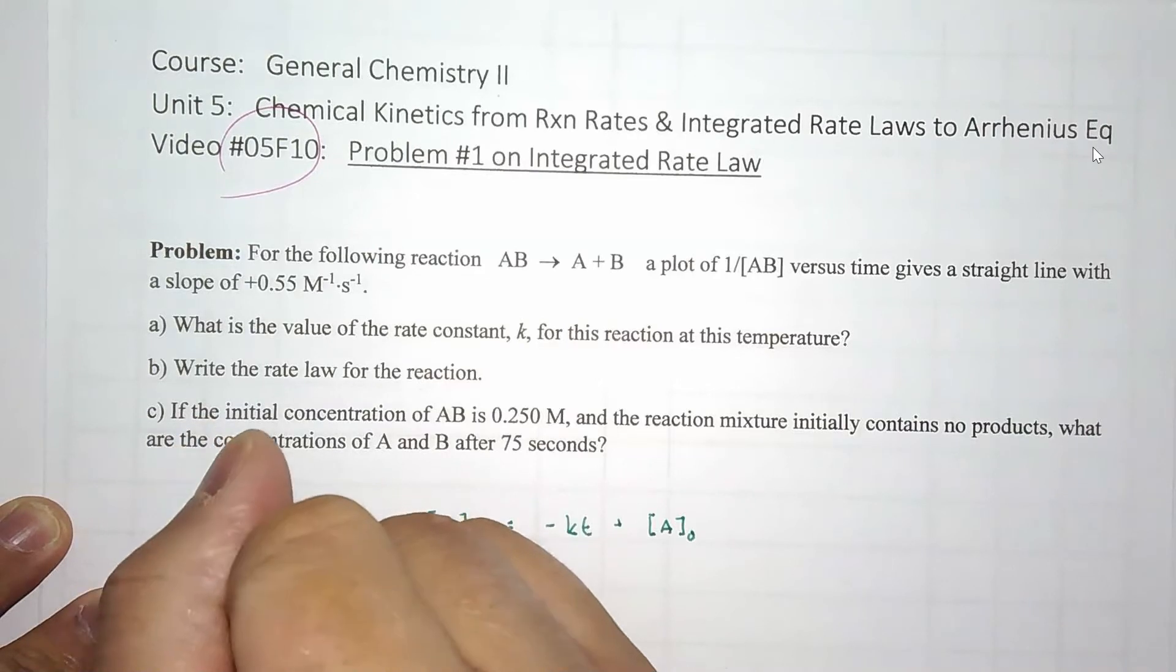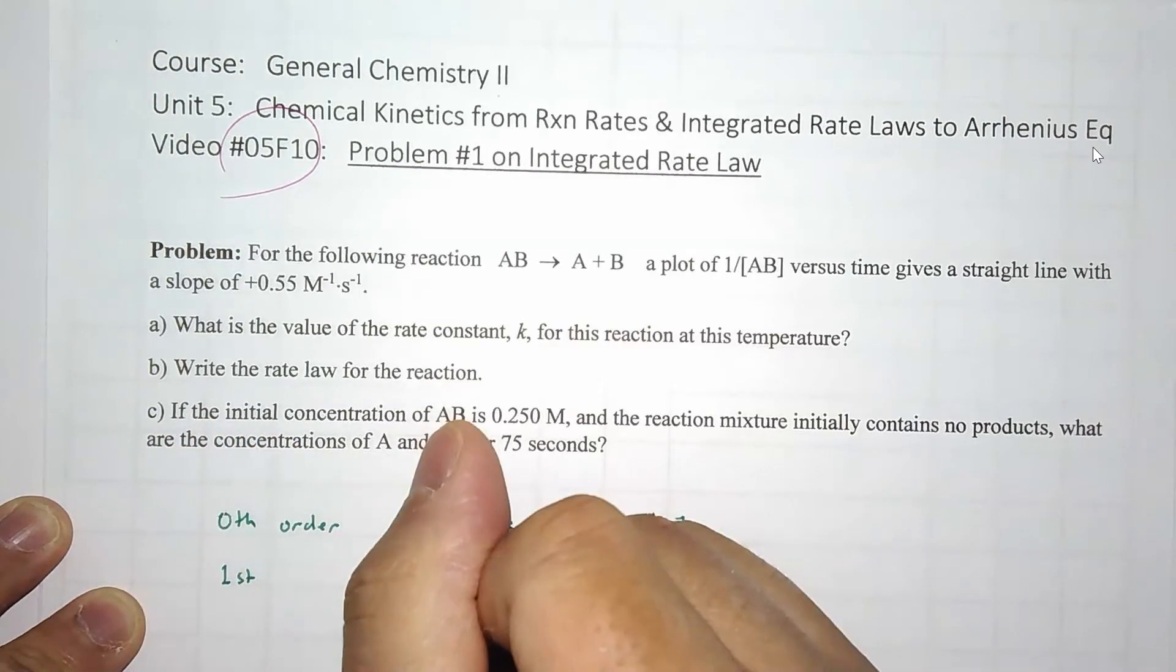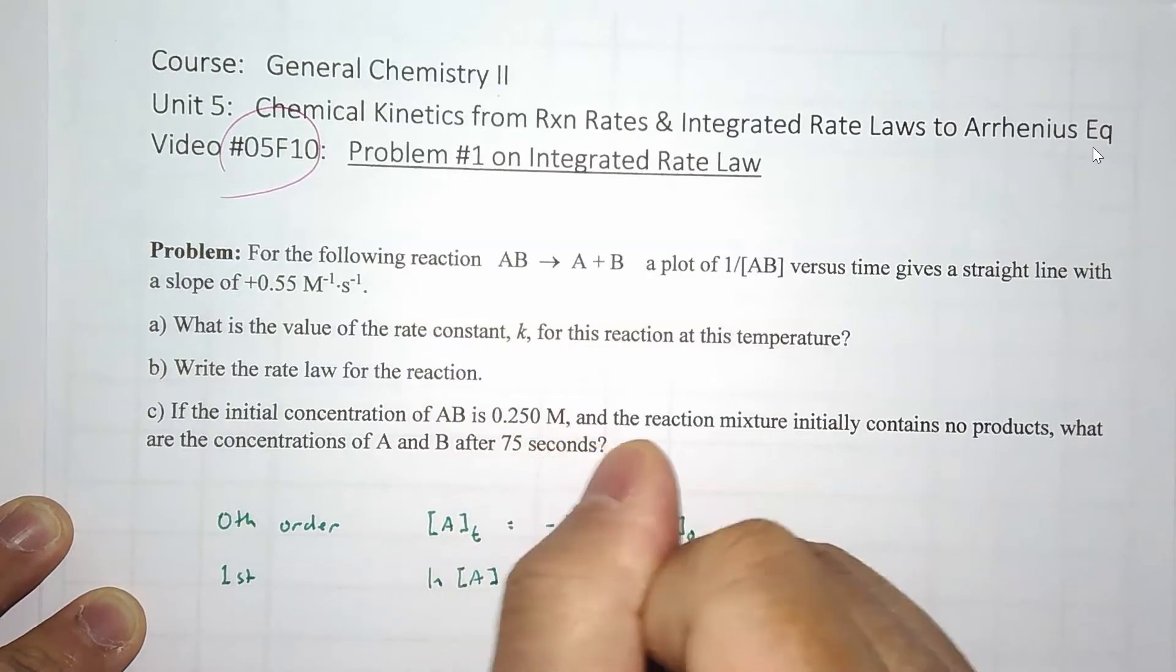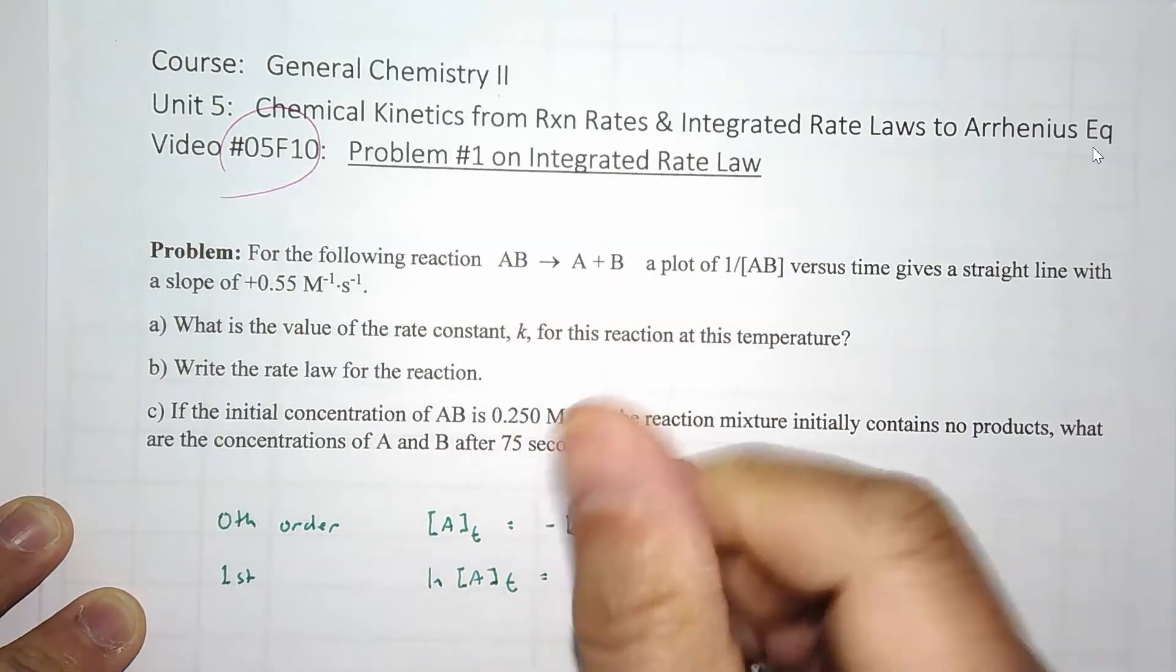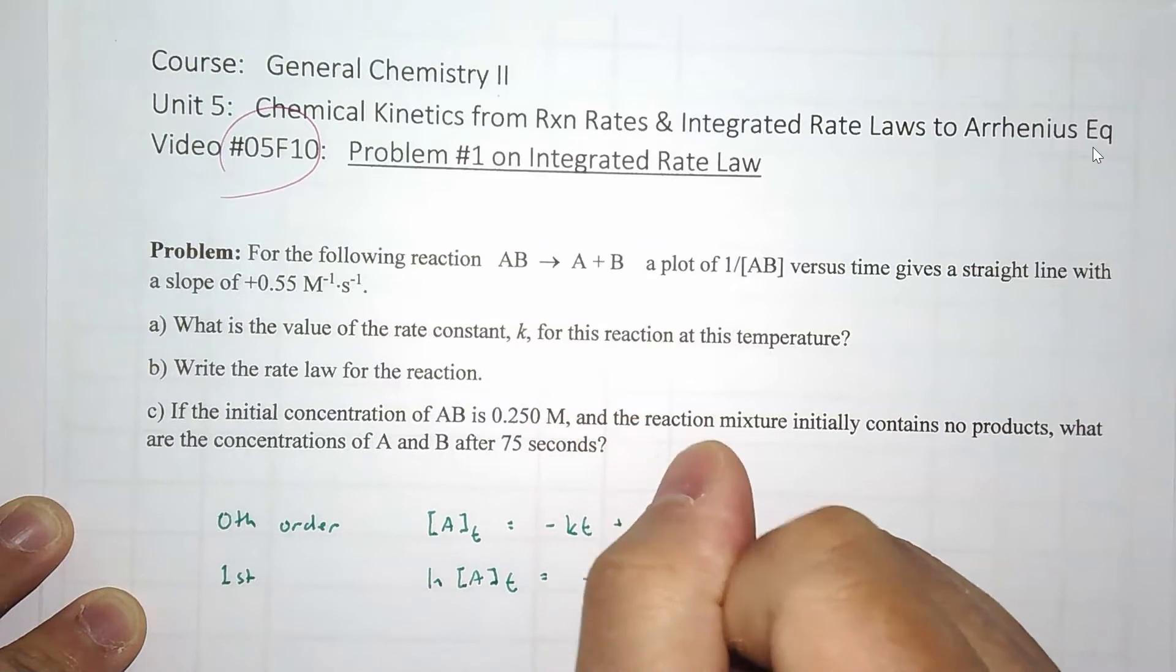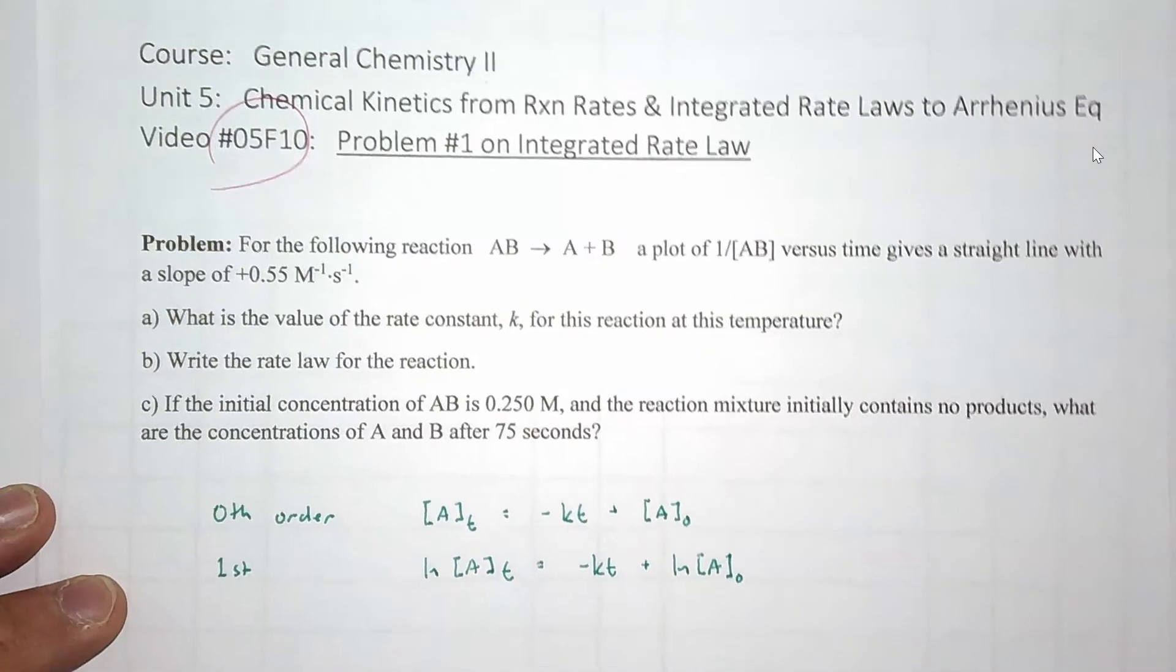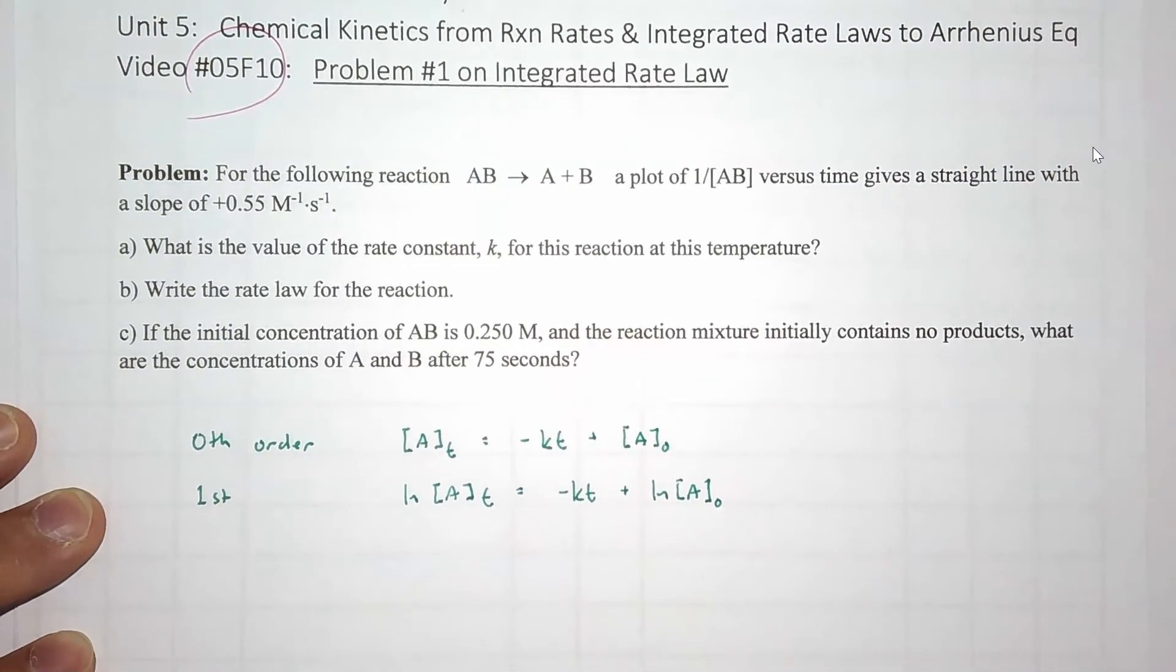For first order, it is the ln of the concentration of A at a certain time point. It equals negative kt plus ln of [A] at the initial concentration.